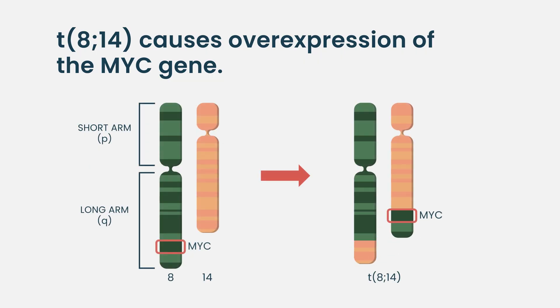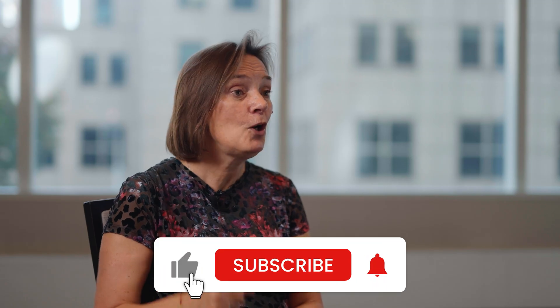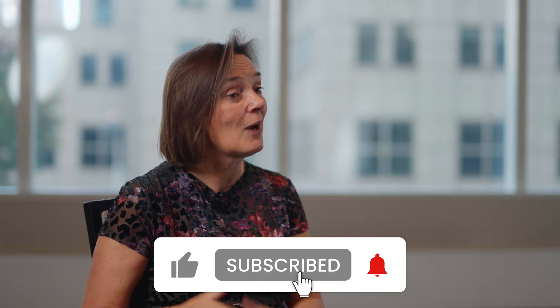Bringing those two chromosomal regions together means this gene goes up. One of the reasons it's important is that patients who have that problem — their cells grow incredibly quickly and often don't respond to many of our current treatments. So we're very keen on trying to look at ways of decreasing the expression of MYC and killing those cells off.